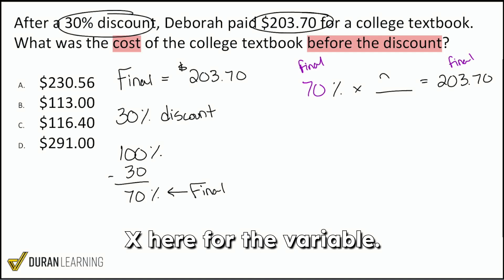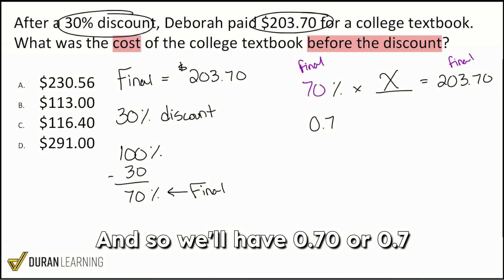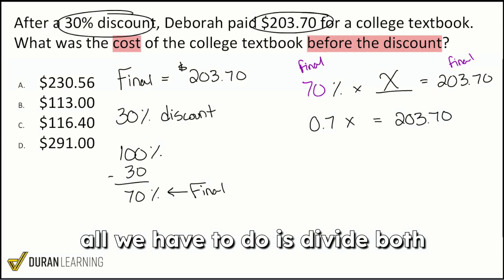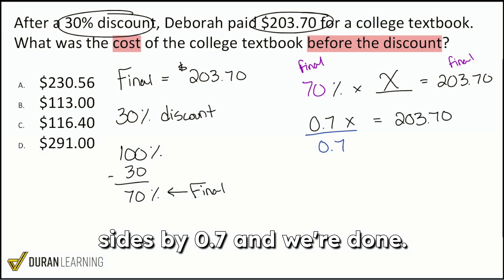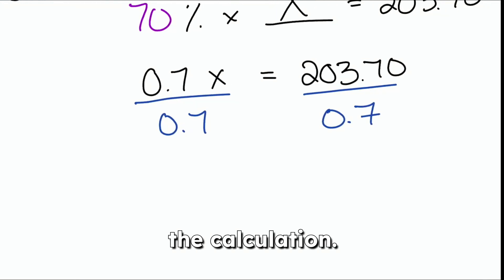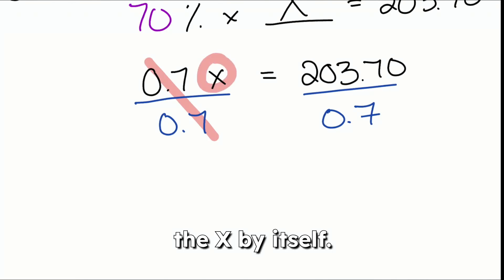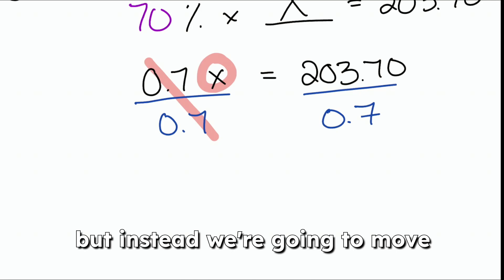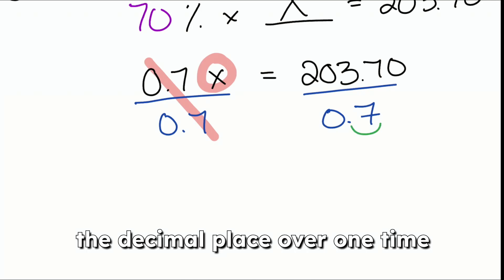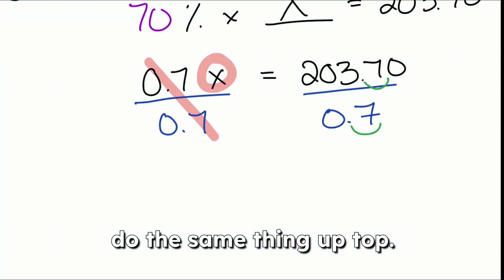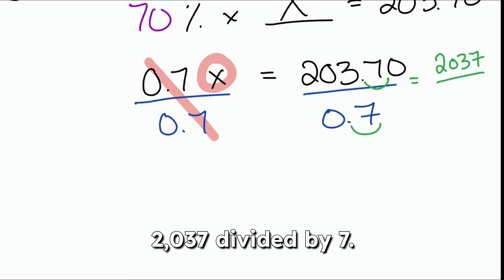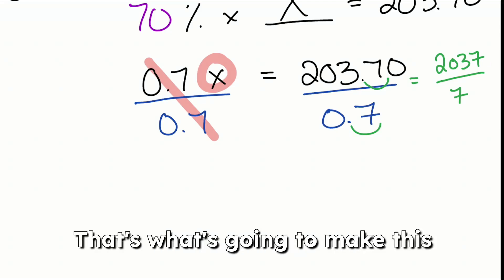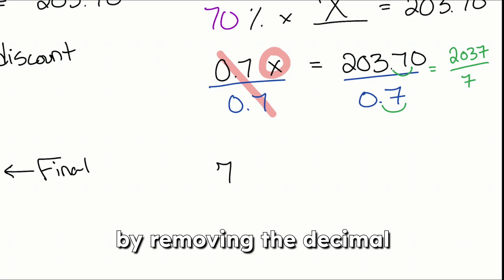We'll put X for the variable, so: 0.70 multiplied by X equals 203.70. To solve, divide both sides by 0.7 — that cancels out to leave X by itself. To divide by a decimal, we move the decimal place one spot to the right on both sides, turning this into 2037 divided by 7. That removes the decimal entirely and makes this much easier to calculate.